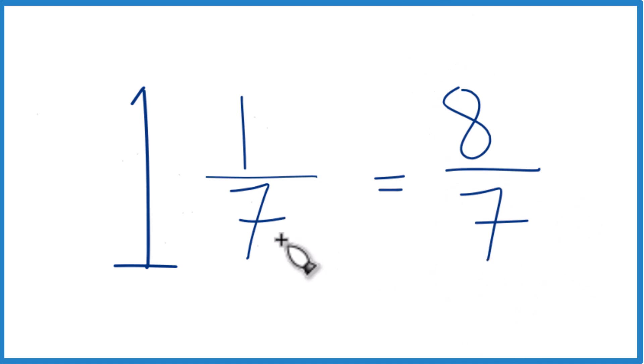And these numbers are equivalent. They're equal. They have the same value. It's just representing 1 and 1 7th as an improper fraction. That's the 8 7ths.